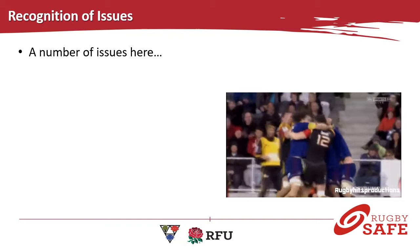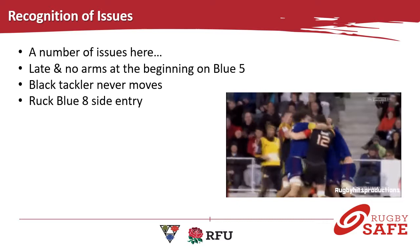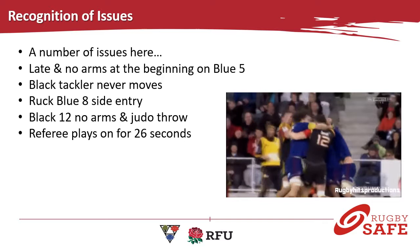How many did you spot? The first thing was the late no-arms hit at the beginning on the blue five — that didn't really seem to ignite things too much, but it might have been a good time to deal with it, because clearly this is a tense game. Look at the rucks — everybody is flying in, off their feet, coming through the side. The black tackler never moves away at the next one. Blue eight comes in at the side of the ruck. Then Sonny Bill Williams wearing 12 black does a no-arms tackle and then a judo throw. The referee plays on for a full 26 seconds before stopping the game.